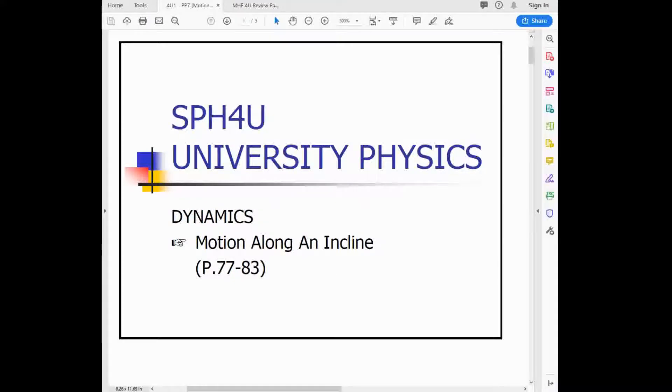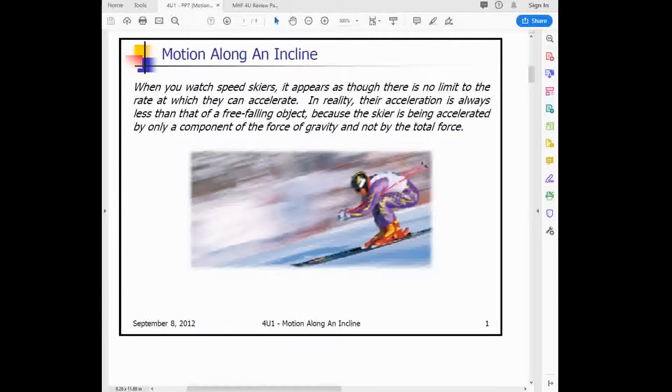So this next lecture is section 2.3 of the textbook. It's titled Motion Along an Incline and the example here given is about a skier going down a hill. When you watch skiing on the Olympics for example, it seems that these skiers are moving incredibly fast and they're accelerating at a limit that you're really not familiar with, or something that seems really fast for a human to be accelerating at.